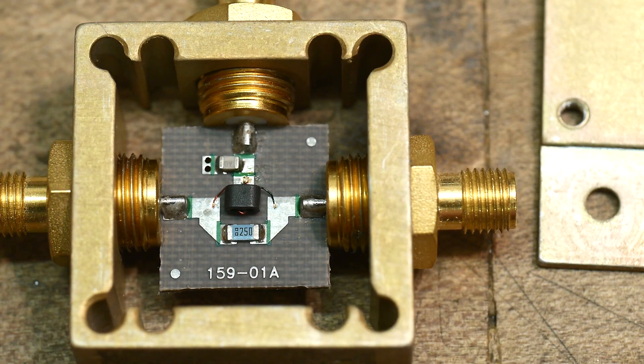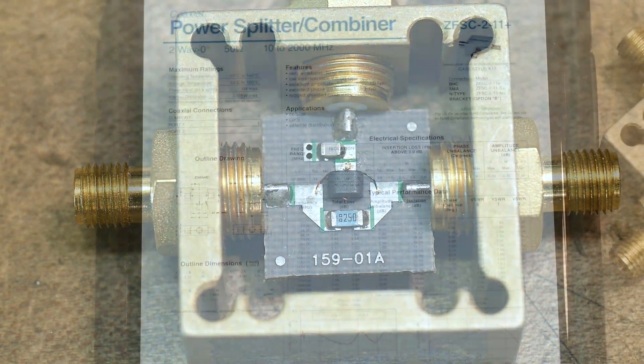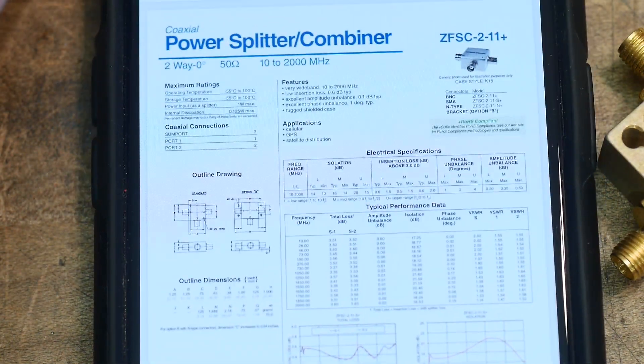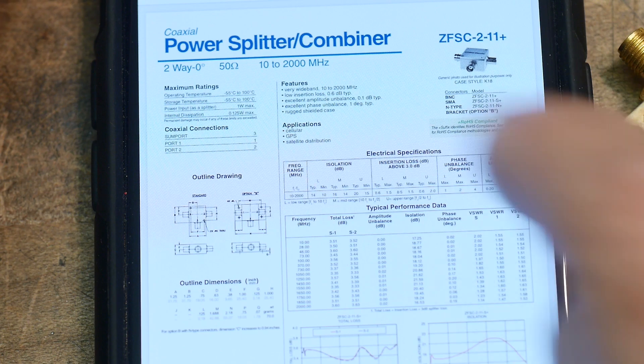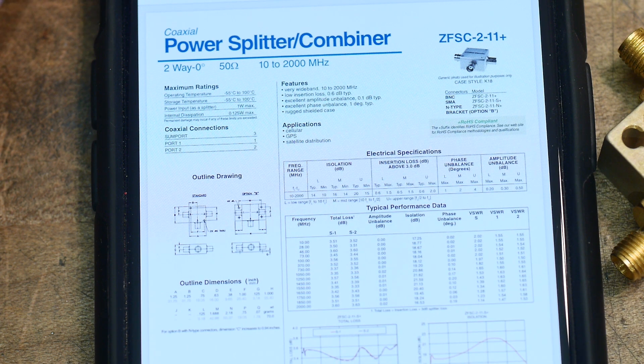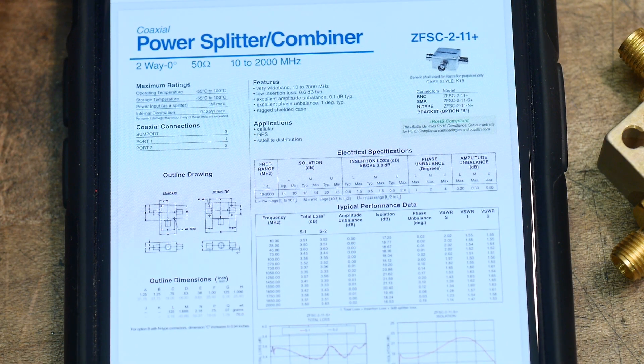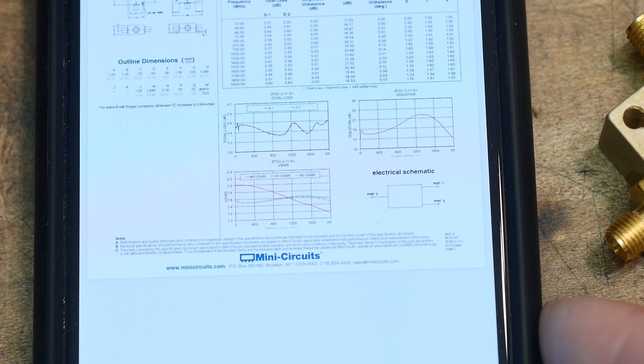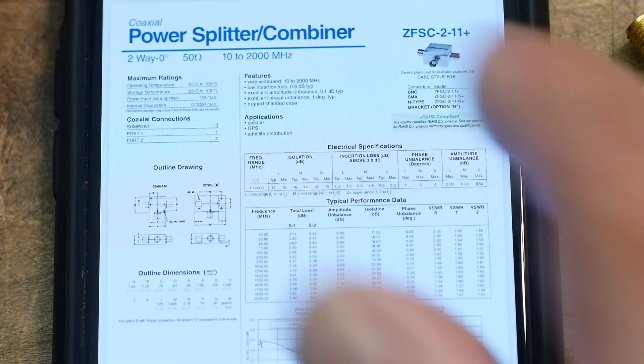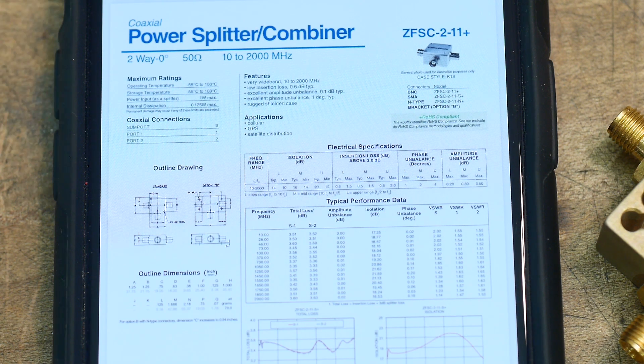So let me look it up online. All right. It looks like it's good from 10 megahertz to 2 gigahertz. So yeah, there's some graphs and stuff down here. But let's go ahead and saw those ears off and make it part of the family.